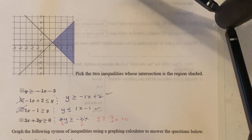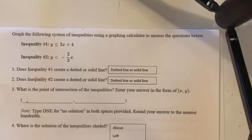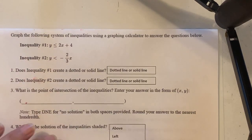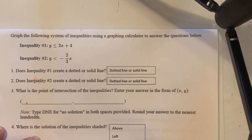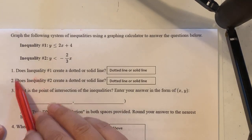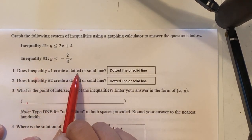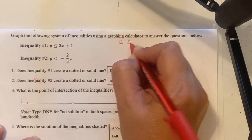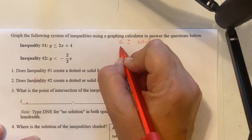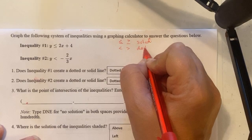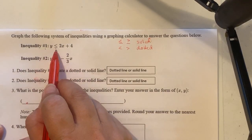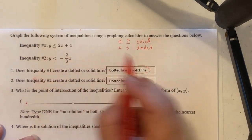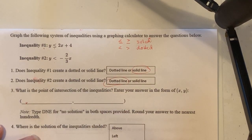Moving to the next example: graph the following system of inequalities using a graphing calculator to answer the questions. Before graphing, we can answer questions one and two. Inequality one has a less than or equal to symbol, which means a solid line. Inequality two has no equals sign, which means a dotted or dashed line.